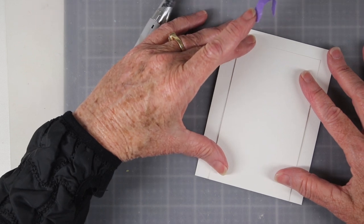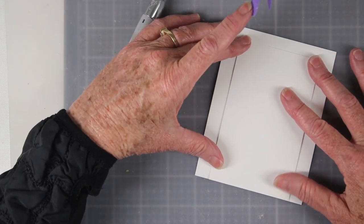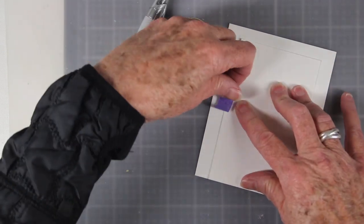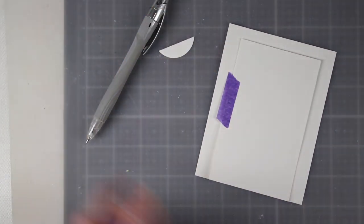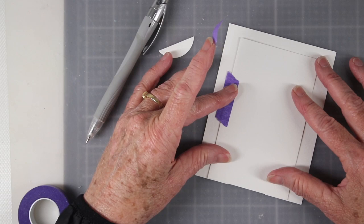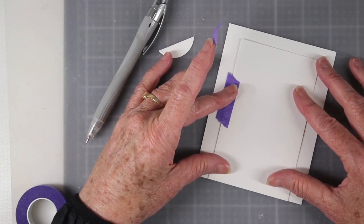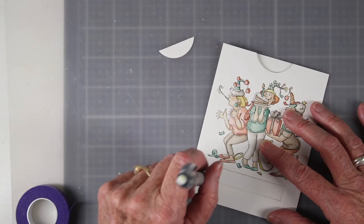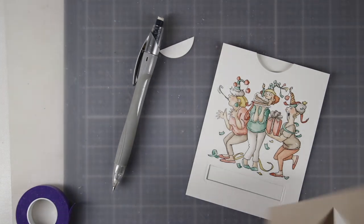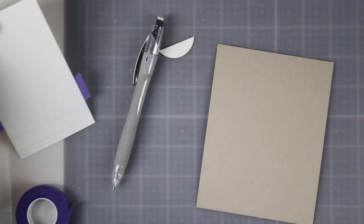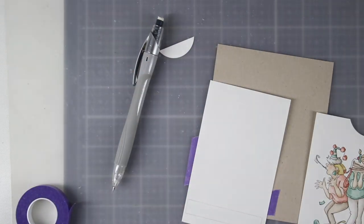Once that's trimmed I am aligning that panel to the top of the card and just want to make sure I get it all straight. I'll put a little bit of purple tape to hold it in place just until I get it stamped. Then I'll flip the panel over and use my pencil to create a pencil guide so I know right where to stamp and I'll remove that backing.